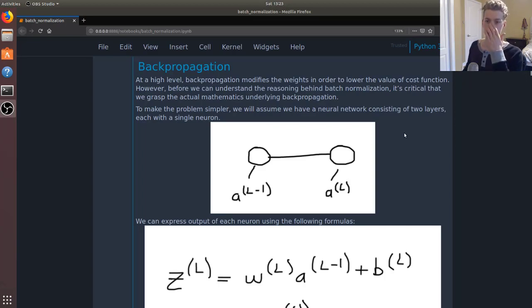To make this as simple as possible, let's assume that we have a neural network of two layers and each layer contains only a single neuron. We have the first layer here L minus 1 and then the last layer L.